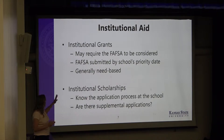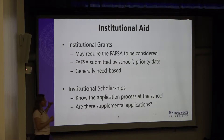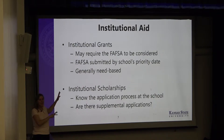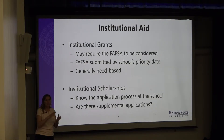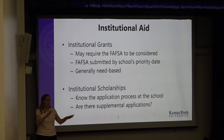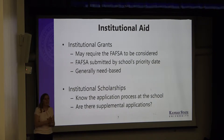Institutional grants are more need-based through the FAFSA — make sure you complete the FAFSA by the school's priority date. December 1st is K-State's priority date; December 1st to December 15th is the priority date for many schools within Kansas. Check their websites for that information.